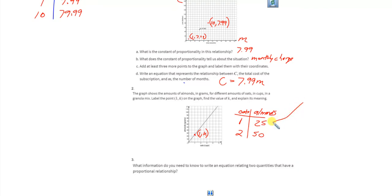And the meaning of this right here. This is our constant. It's what we multiply the oats by to get the almonds. This is our constant of proportionality, not constants. It's our constant. It means that every cup of oat used in the granola mix requires 25 grams of almonds.